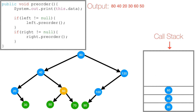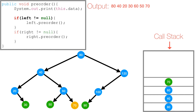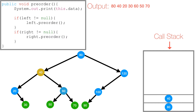We've visited 60's left subtree containing 50. Now we check if 60's right is not null — it's not — so we call preorder on 60's right subtree. 70 gets pushed to the call stack, and we print 70. Then 70's left is null, and 70's right is null, so 70 gets popped off the call stack. We're back at 60 — we've visited 60's left containing 50 and 60's right containing 70 — so 60 is also popped off the call stack.